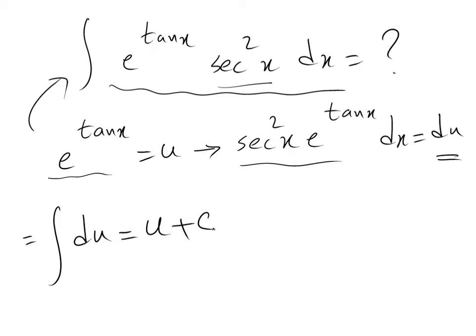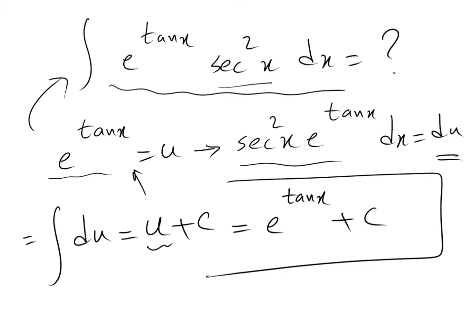All you need to do at this stage is to replace this parameter u by the definition that is here. U is equal to e with the power of tangent x, so therefore this will be equal to e with the power of tangent x plus C, that is the constant of the integral. And that's the solution to this integral.